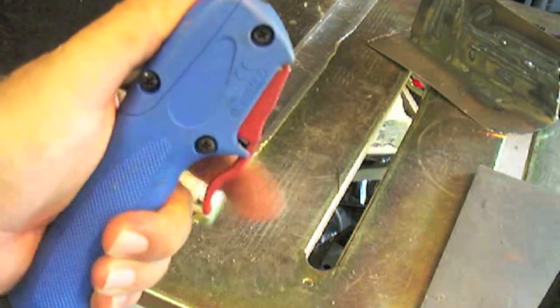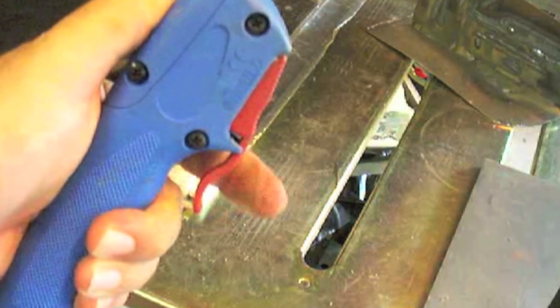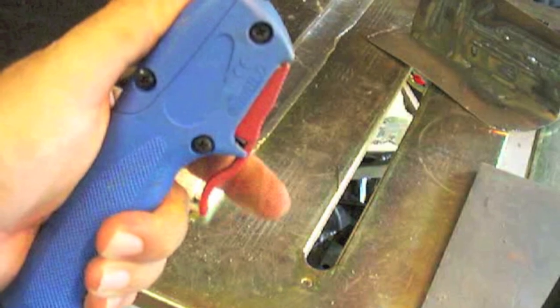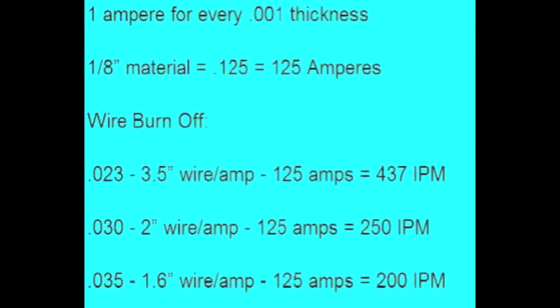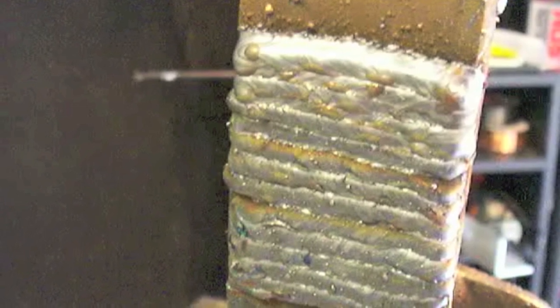Now when you pull the trigger on a MIG gun, a lot of things happen. The drive rollers start feeding wire, the current is initiated to get your arc, and the gas starts flowing. And so a lot of stuff happens with that trigger pulling here. Now how to set the machine. You can go to my website, there'll be a link at the bottom of this YouTube video, it'll have this chart here. This is a really good starting point for setting your machine. I won't go into it right now.